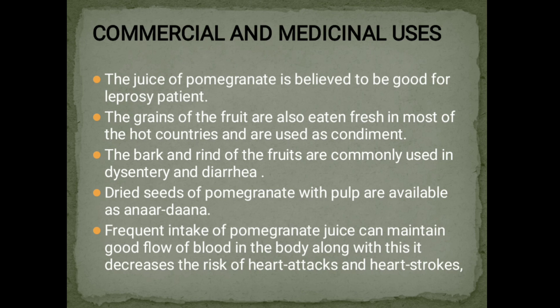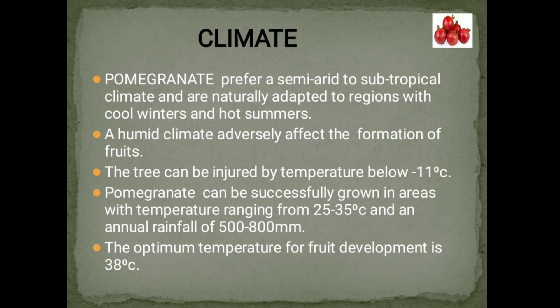Climate. Pomegranate prefers a semi-arid to subtropical climate and is naturally adapted to regions with cool winters and hot summers. A humid climate adversely affects the formation of fruits. The tree can be injured by temperatures below minus 11 degrees Celsius. Pomegranate can be successfully grown in areas with temperatures ranging from 25 to 35 degrees Celsius and an annual rainfall of 500 to 800 mm. The optimum temperature for fruit development is 38 degrees Celsius.